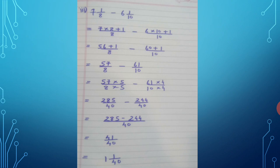This gives 285 upon 40 minus 244 upon 40. 285 − 244 = 41 upon 40. Dividing 41 by 40: quotient 1, remainder 1, divisor 40. Final answer is 1 and 1 upon 40.